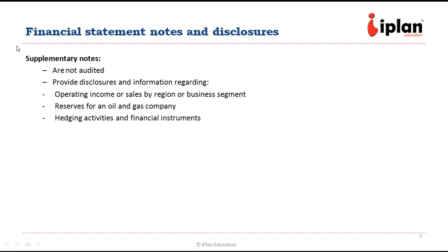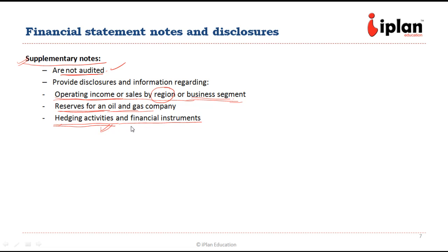Then there are supplementary notes, which need not be audited. They provide information regarding, for example, operating income by a region or a particular segment of the business. Since the P&L statement covers the overall income inclusive of all segments, we can provide that information separately in supplementary notes. They might also include information regarding reserves if it is an oil or gas company. Supplementary notes also provide information to investors regarding the company's hedging activities and investments in financial instruments or derivatives.